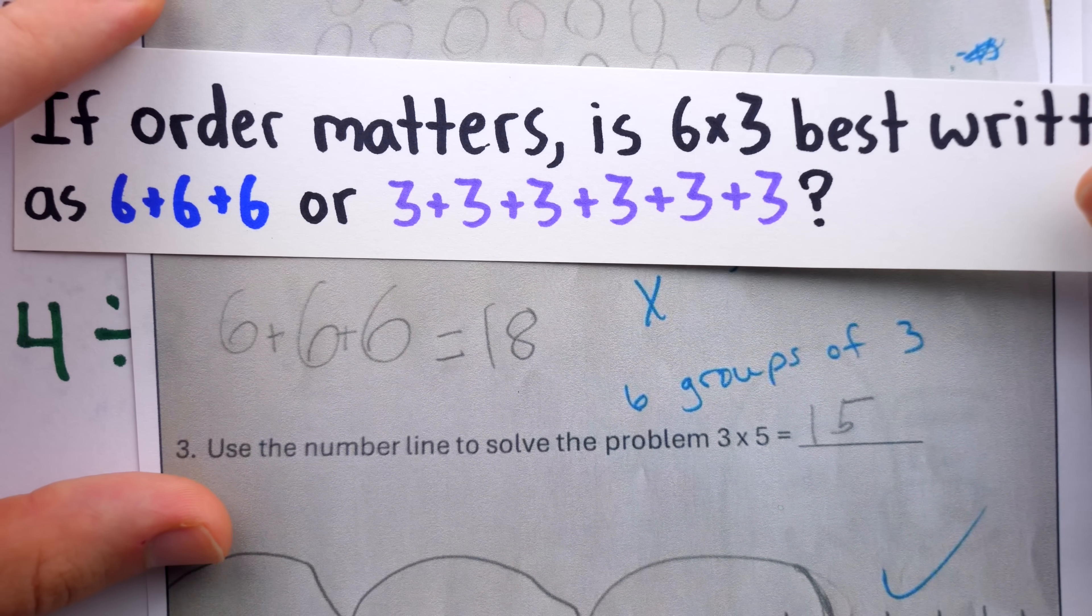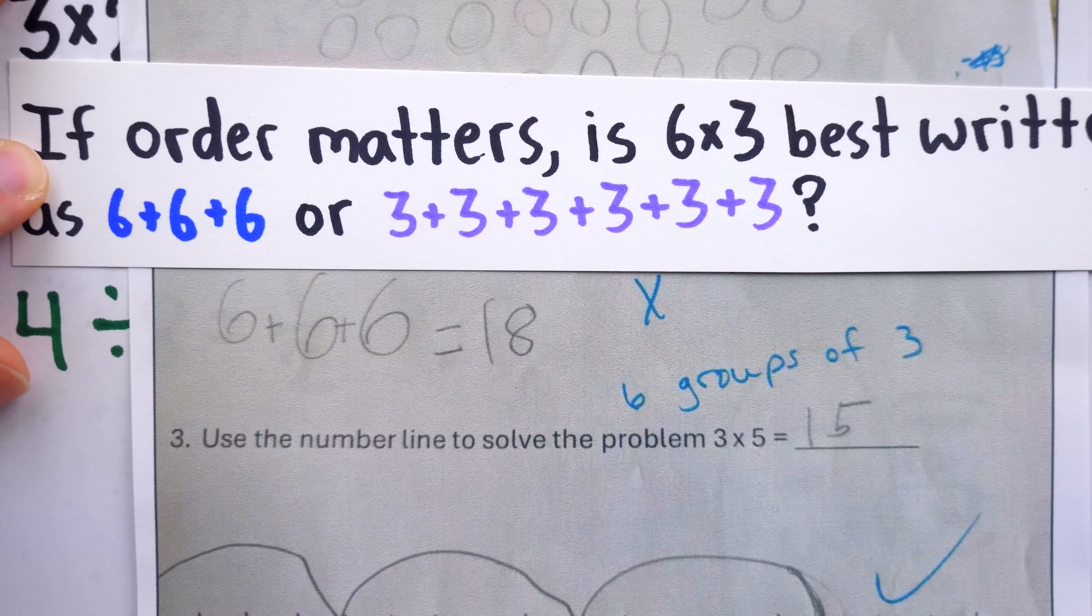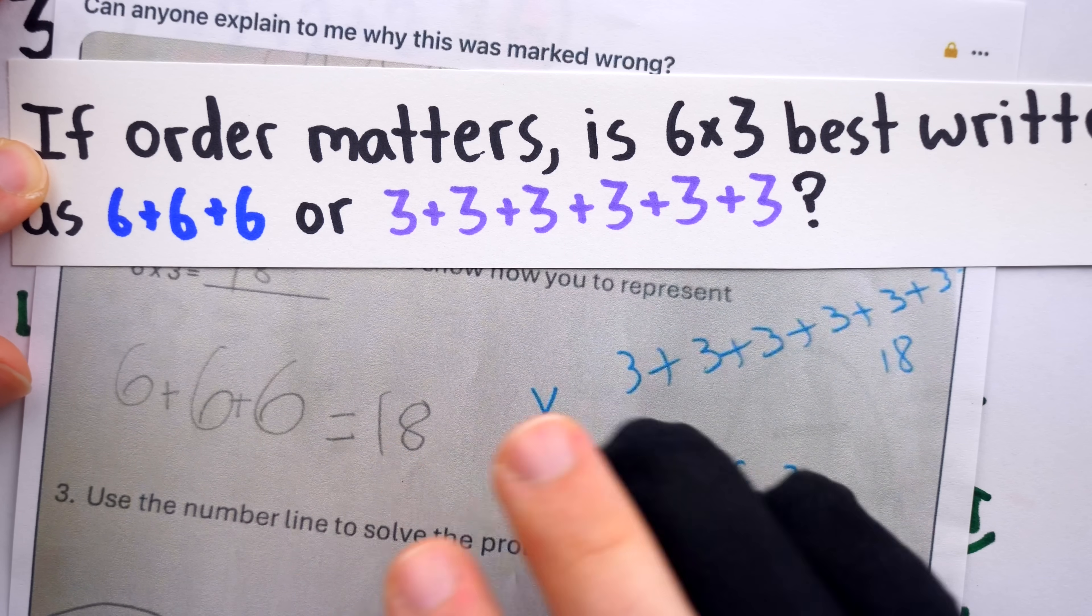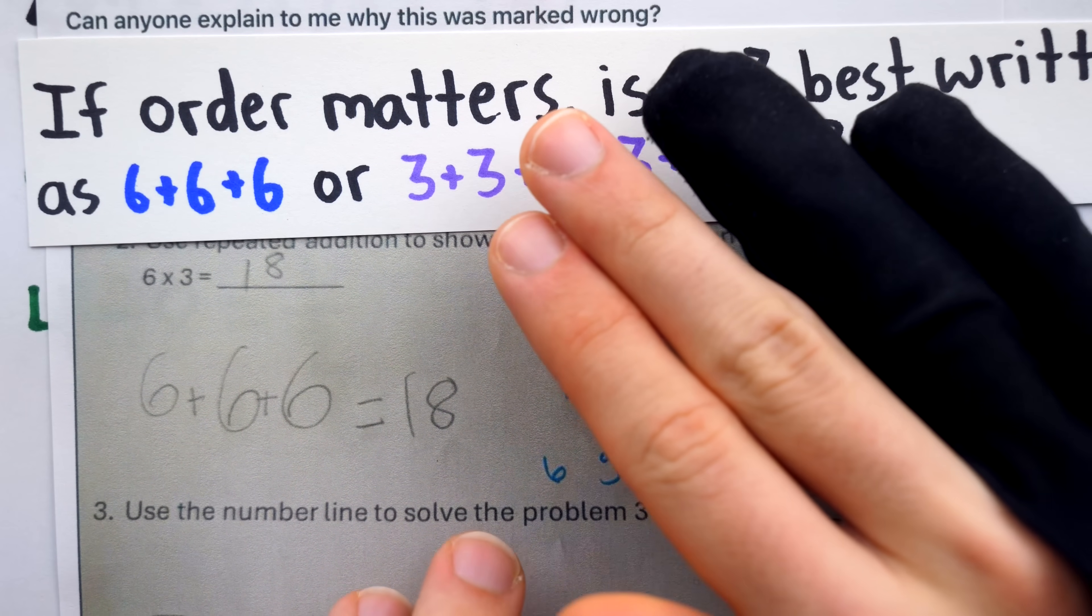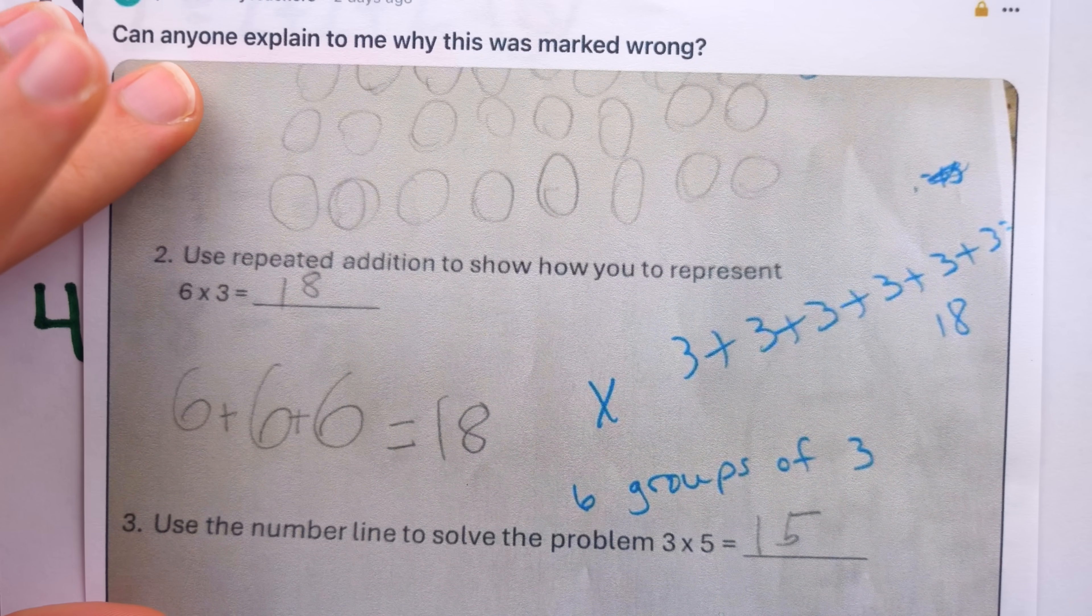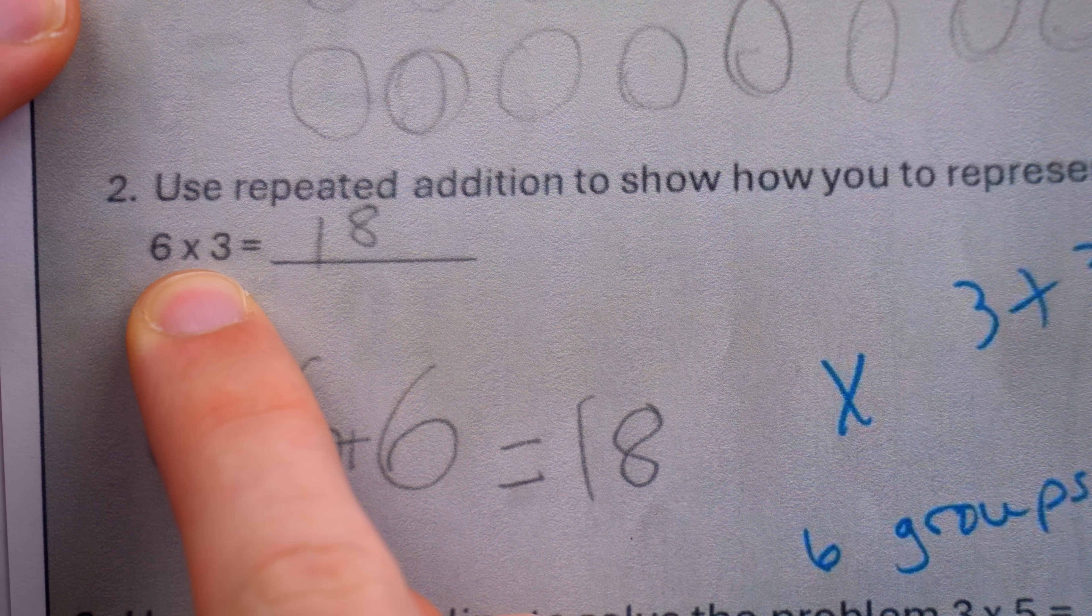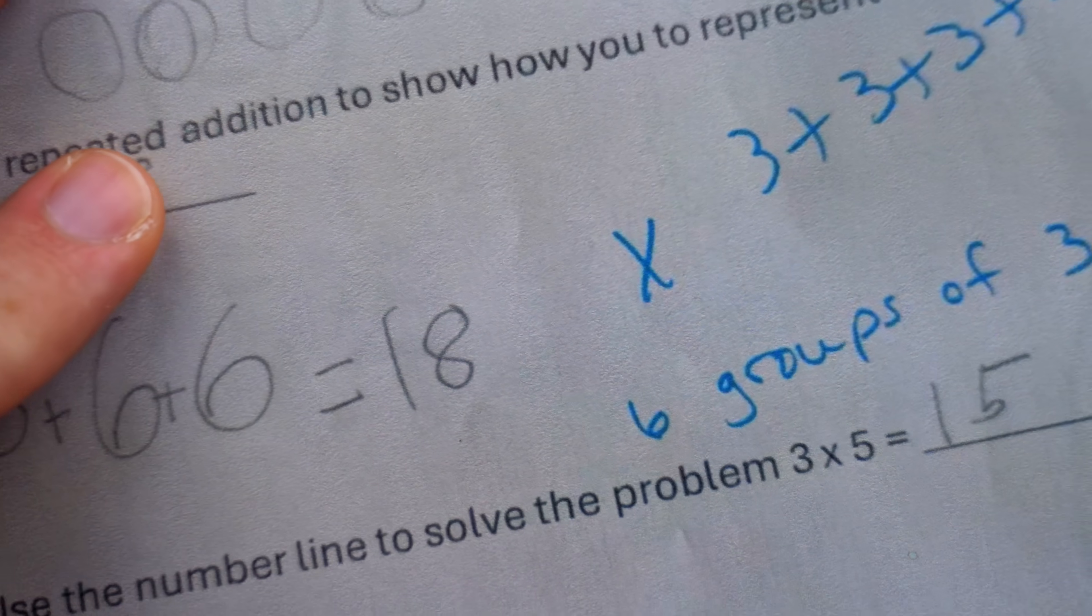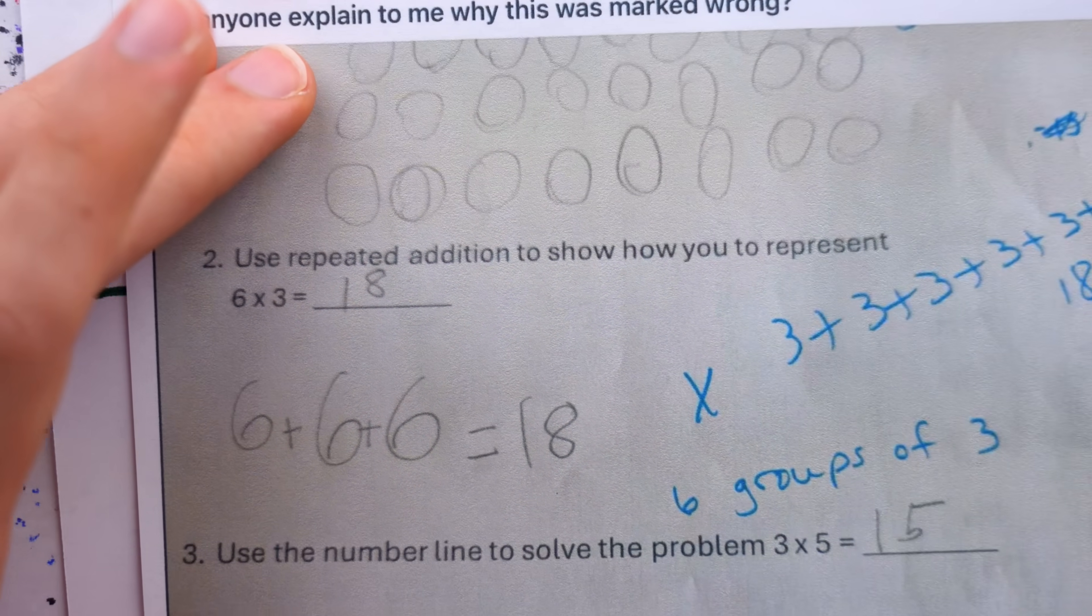Then the other interesting question is, if we'll accept, at least for a time, that order matters, is there a good reason to regard six times three as six groups of three, like the teacher has, or is it really just arbitrary preference? Intuitiveness arguments aren't really valid, because they're totally subjective. Adam might think, obviously, six times three is six three times, but Beau might think six times three is obviously six of three, which really just leaves us to look at cultural and historical precedent. In the last year, YouTuber Mind Your Decisions has made at least two videos on exactly this sort of problem.